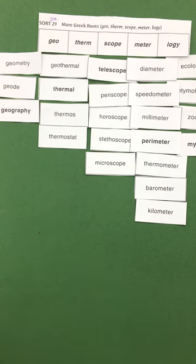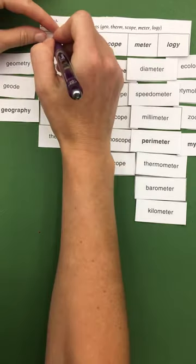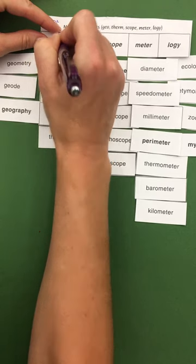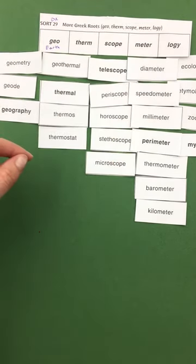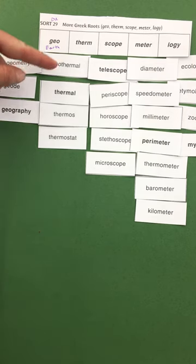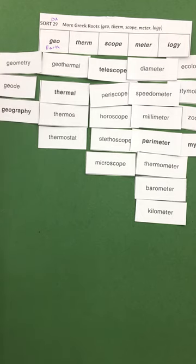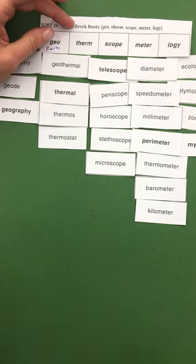All righty. So what do you think the meaning of geo is? Geo means earth. And please go ahead and write the meanings of these underneath, because eventually you're going to get a spell check on them. Therm. Let's look at our therms. What do you think? Therm is heat.